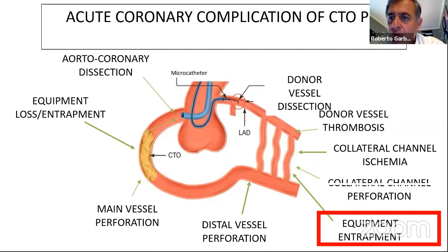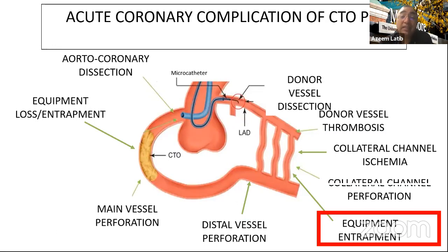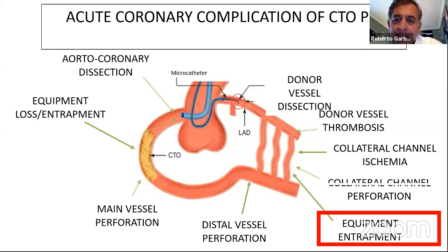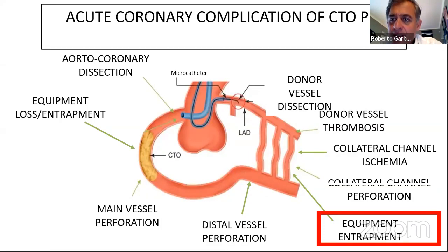An additional advantage of this technique is that it prevents the microcatheter from jumping backward during coil delivery, ensuring coils are placed exactly where needed. Detachable coils — learned from neuro-radiologists treating cerebral aneurysms — are ideal for coronary perforation as they offer perfect control. The typical coil size used is 1.5 or 2 mm diameter and 40 mm length. These are 0.010-inch coils compatible with all microcatheters, and can be detached with a detacher once correctly positioned.